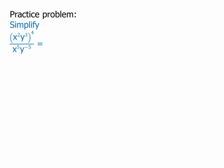Here's a practice problem — pause the video, and then we'll talk about this. In the numerator, all we're going to do is multiply out that 4 — just distribute it to each one of those terms. For each one of those terms, we're going to have a power to a power, which means multiply the exponents. So we're going to wind up with x to the 8th, y to the 12th.